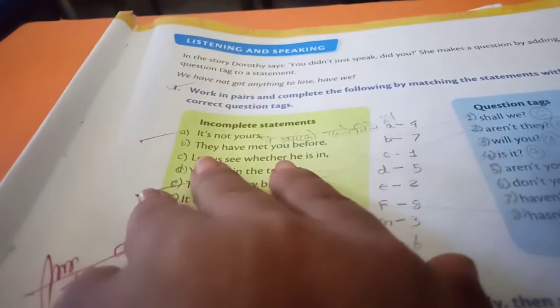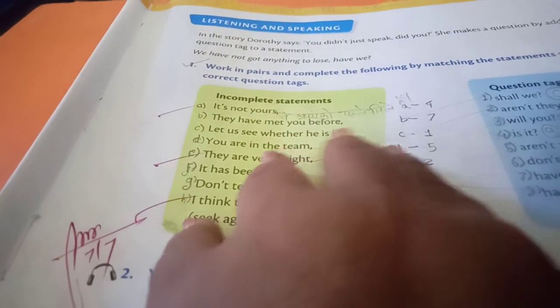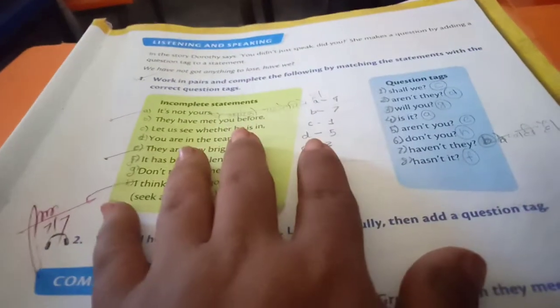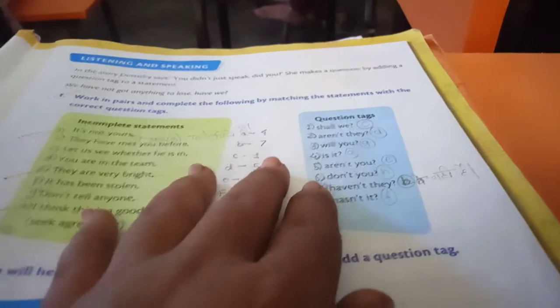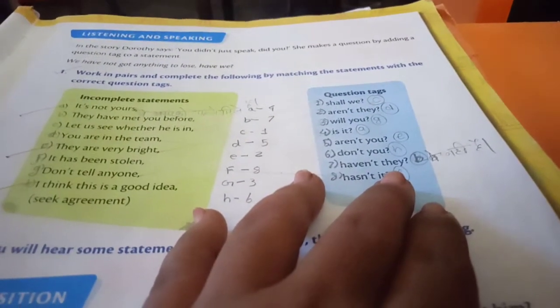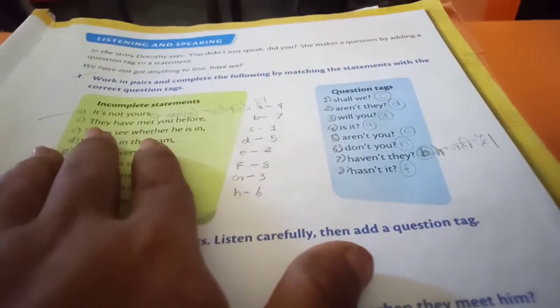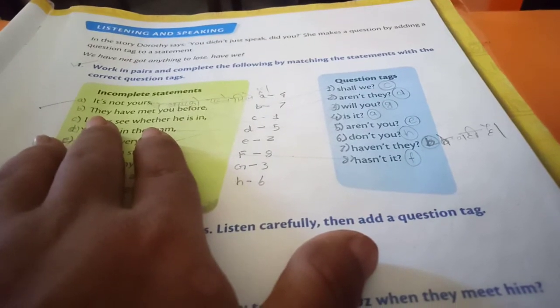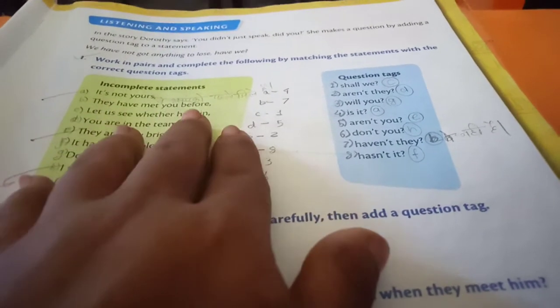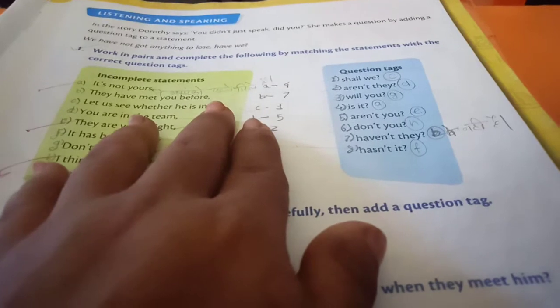Question number B: They have met you before. What is the question of this answer? See, haven't they? What is the answer? They have met you before.